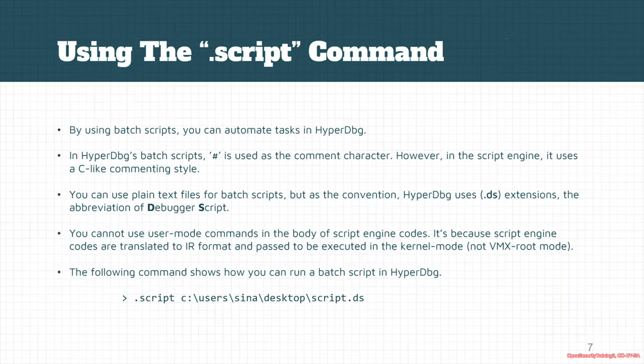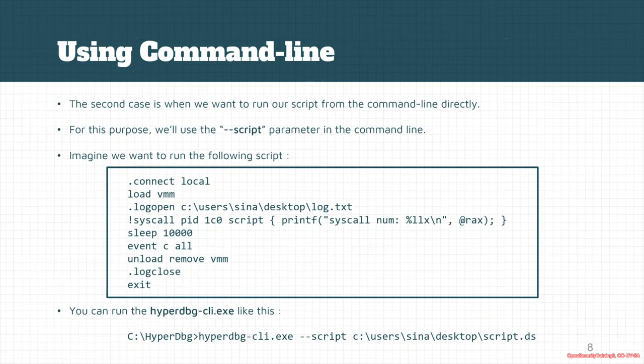If you use a HyperDVG S script for an event, the S script itself will be parsed, converted to an IR format, and sent to be executed in kernel mode. Keep this in mind. There is a command in HyperDVG — the .script command — which takes a script file as input and you can use it to simply run batch scripts.